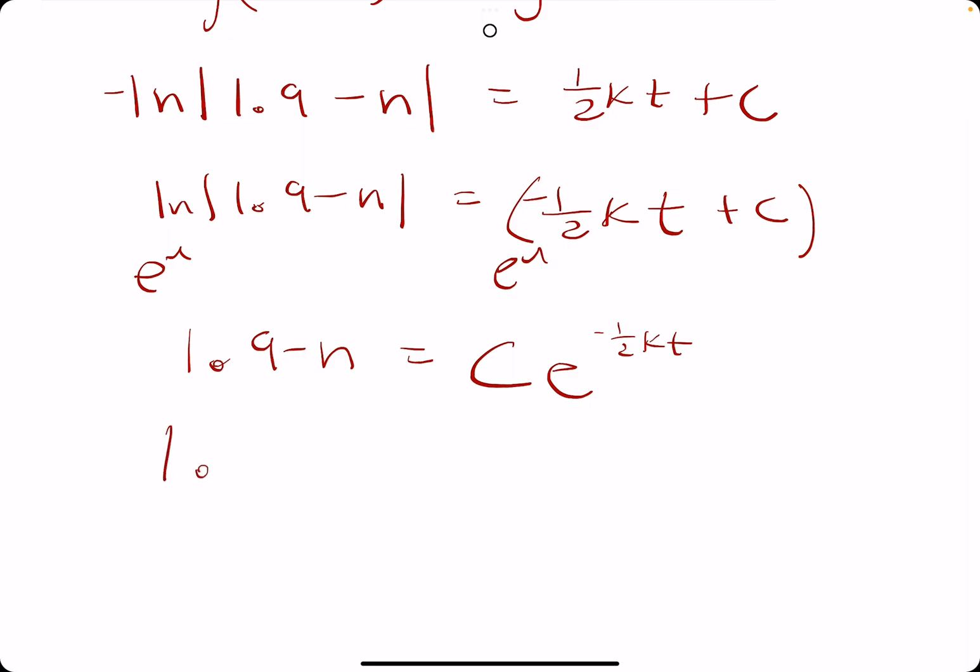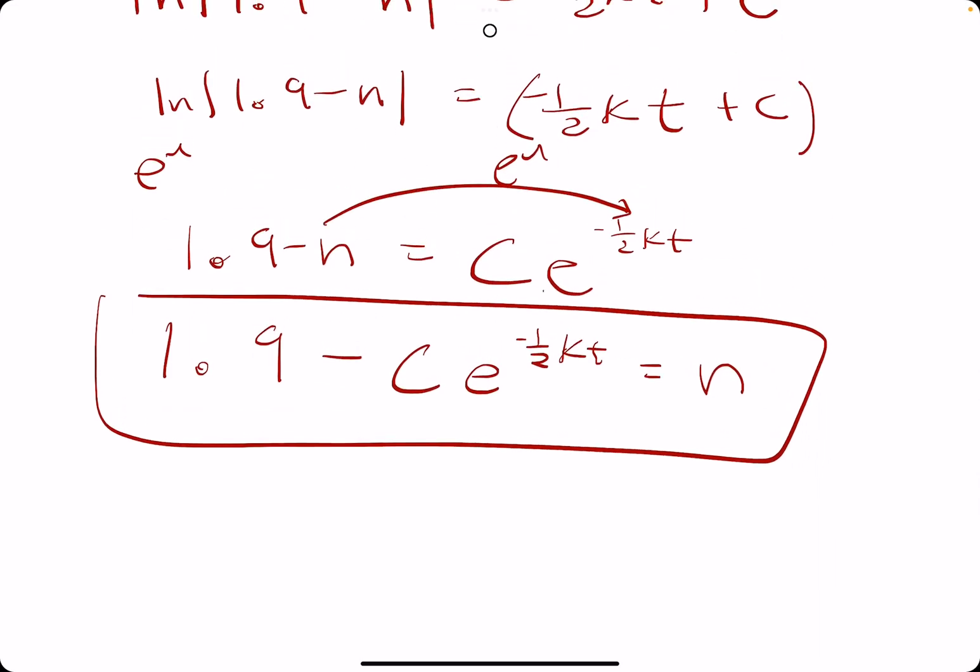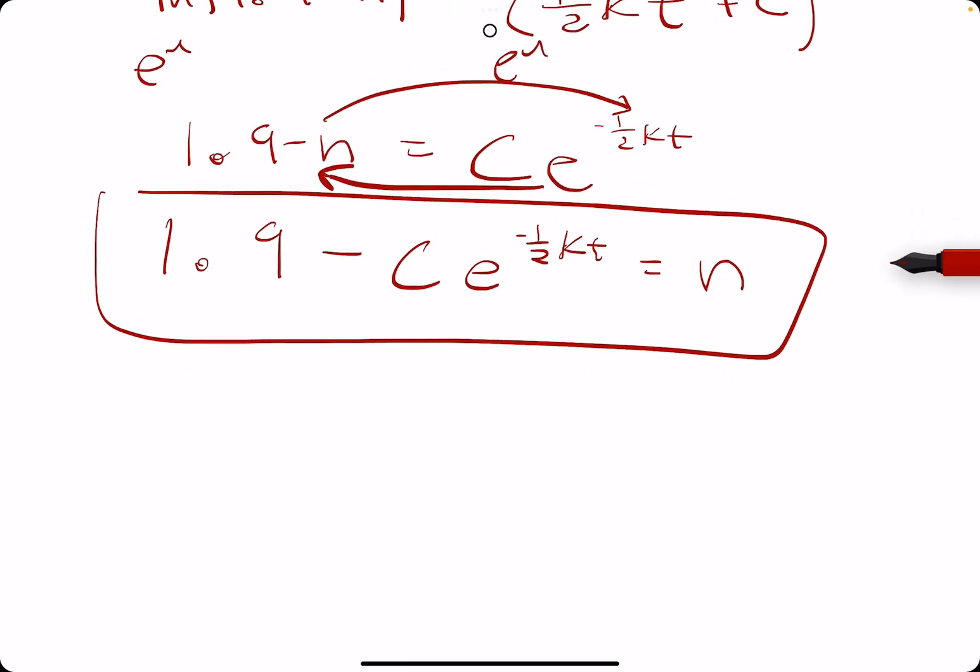Now, we want to subtract the C e term. So, minus C e to the negative one-half kT, and we'll add the n to the right side. So, kind of solve it in a backwards way here. So, adding the n over here, subtracting this over here, switching the places. So, we get this.